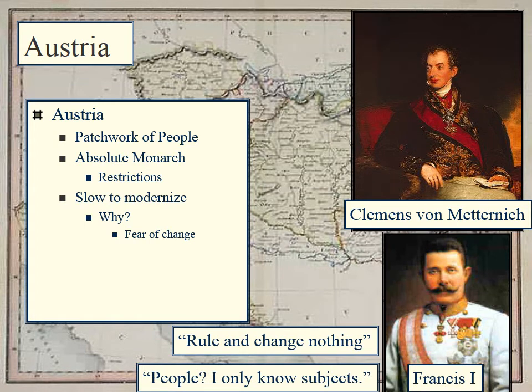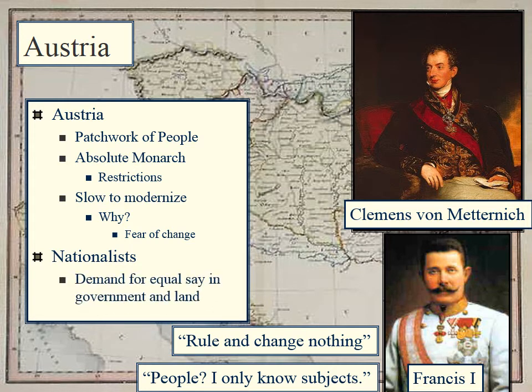Francis, when giving advice to his son Francis Joseph, told him to 'rule and change nothing.' Talking about the people of his empire, he said, 'People — I only know of subjects.' This gives you an idea of his mentality. During this time, nationalists were constantly demanding equal say and land. But because there were so many different groups, giving land to each individual culture would rip the empire apart. It was a very volatile time period in Austrian history.